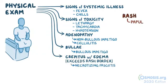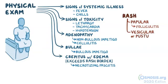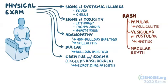Crepitus with edema that exceeds the rash border can be seen in necrotizing fasciitis. The rash may be papular as in folliculitis, vesicular or pustular like in impetigo, or there may be macular erythema like in cellulitis.